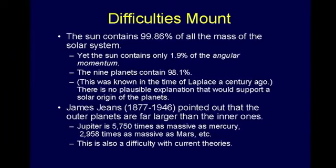Even though the Sun has 99.86% of the mass, it contains only 1.9% of the angular momentum. What on earth is angular momentum? Momentum is someone's mass times velocity. If you push somebody on a skateboard, it takes some energy to get them going, but once you've got them going, they'll coast until friction catches up. When you talk about something spinning, there is also momentum — it's not linear, it's angular momentum.